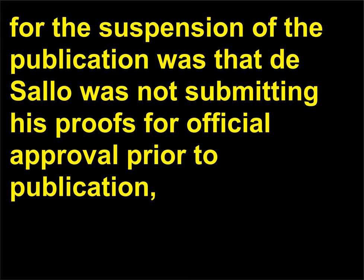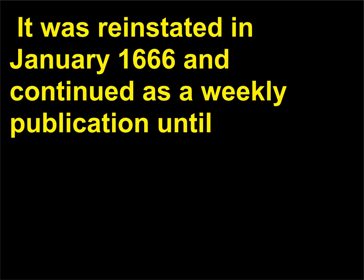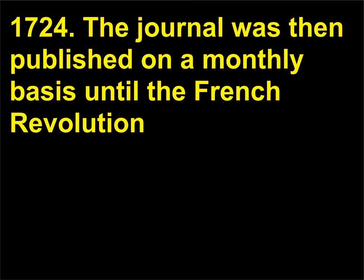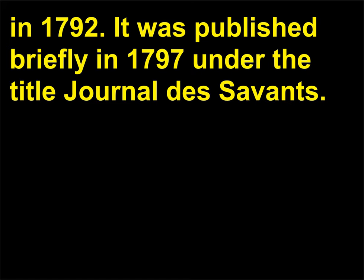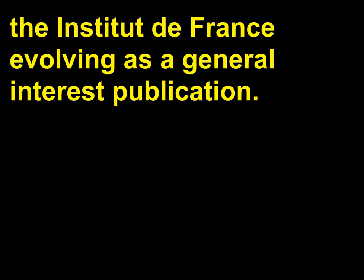Although the official reason for the suspension was that de Sallo was not submitting his proofs for official approval prior to publication, there is speculation that the real reason was his criticism of the work of important people, papal policy, and the old orthodox views of science. It was reinstated in January 1666 and continued as a weekly publication until 1724. The journal was then published on a monthly basis until the French Revolution in 1792. It was published briefly in 1797, and began regular publication again in 1816 under the auspices of the Institut de France, evolving as a general interest publication.